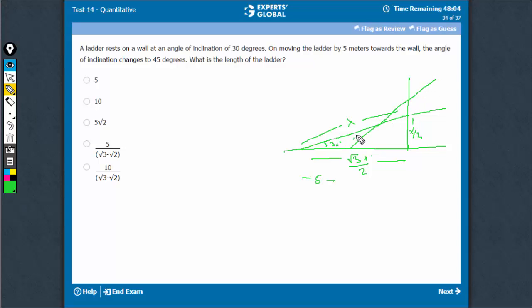So now, the length of the ladder would remain the same, this would still be x. However, this would become x and this part would become - the hypotenuse is x at 45, so this would be x upon root 2 and this would also be x upon root 2.